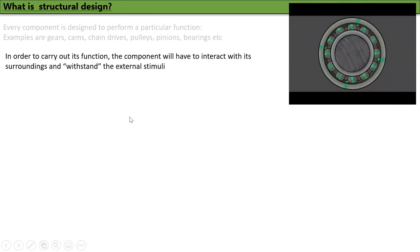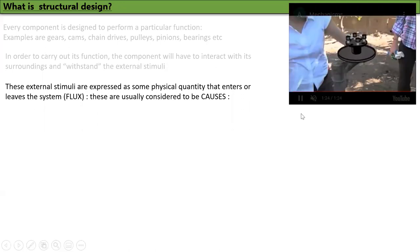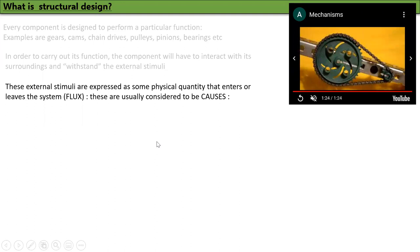In order to carry out its function, the component will have to interact with its surroundings and withstand the external stimuli. These stimuli are expressed as some physical quantity that enters or leaves the system. These are usually considered to be causes.